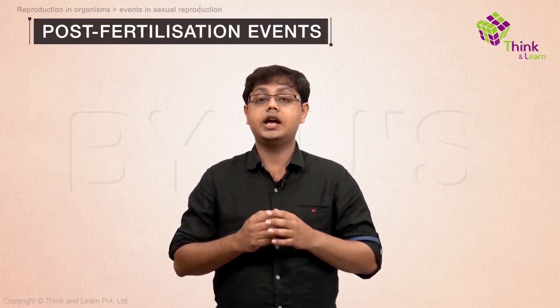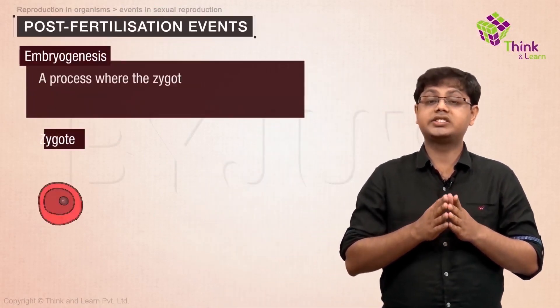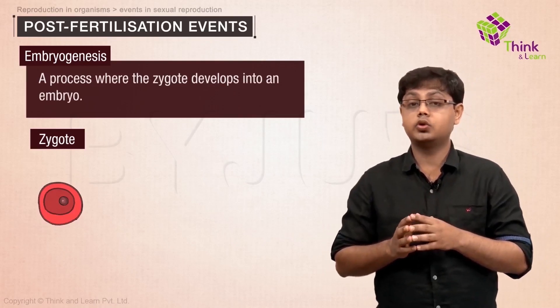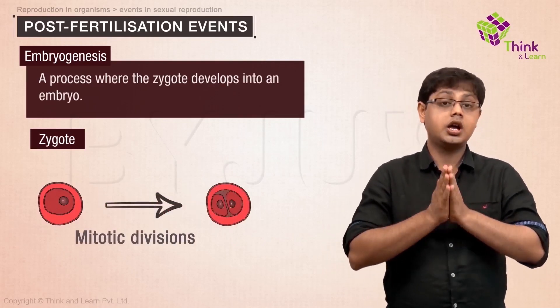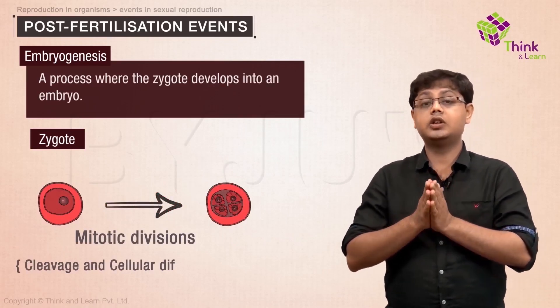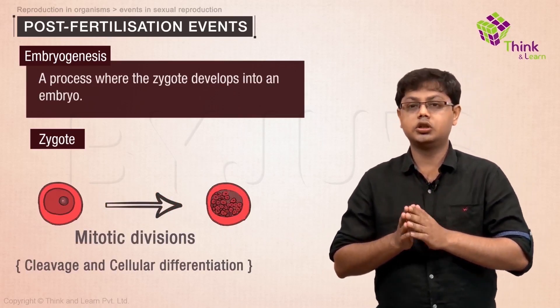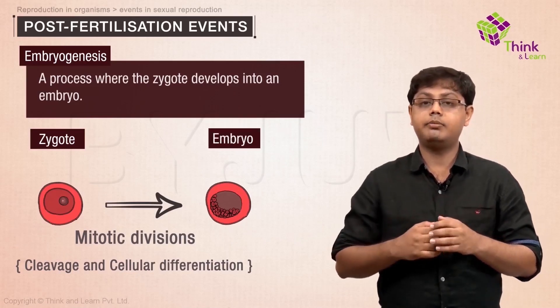Post-fertilization events occur after the formation of the zygote and are known as embryogenesis. Embryogenesis is a process where the zygote develops into an embryo. The zygote undergoes mitotic divisions, a process known as cleavage and cellular differentiation, leading to the development of a multicellular embryo.